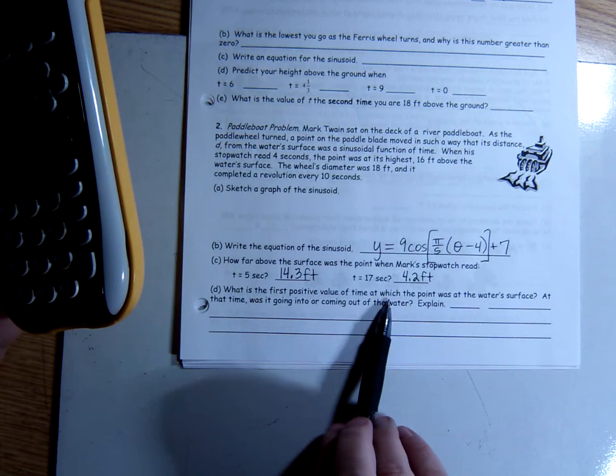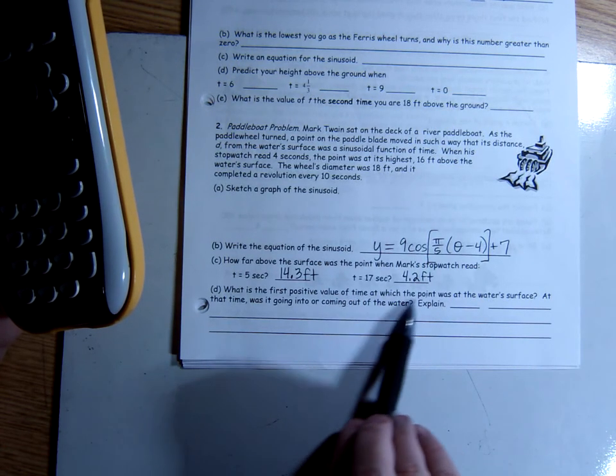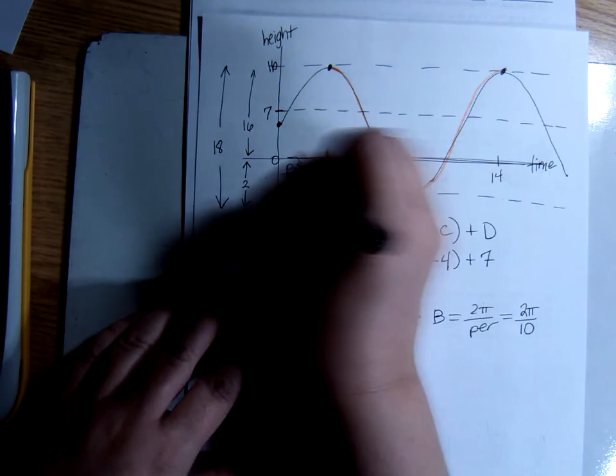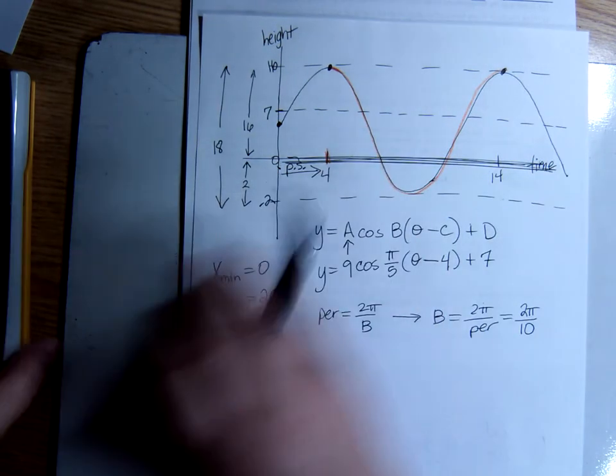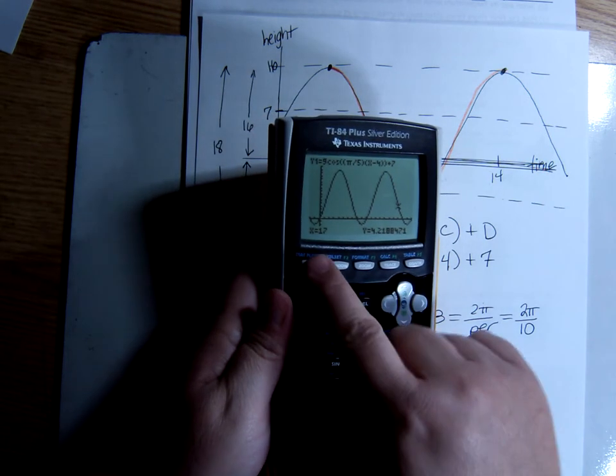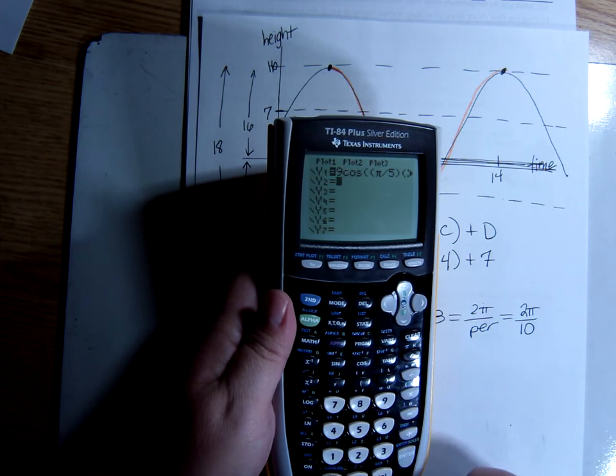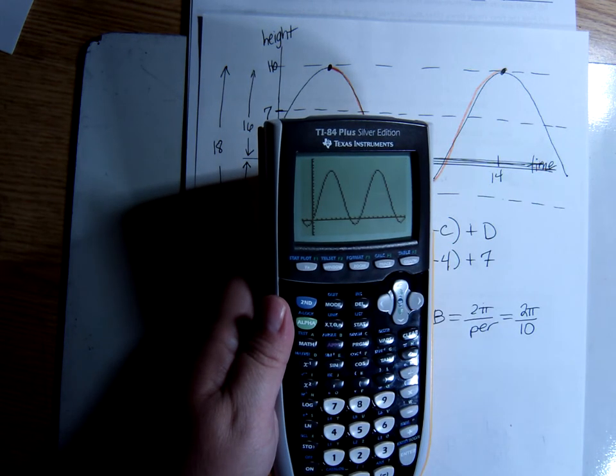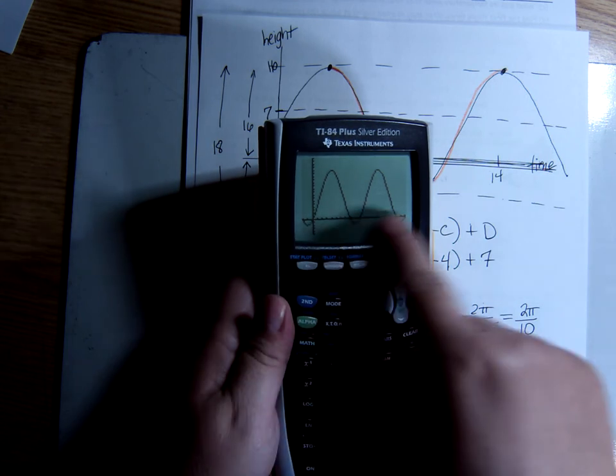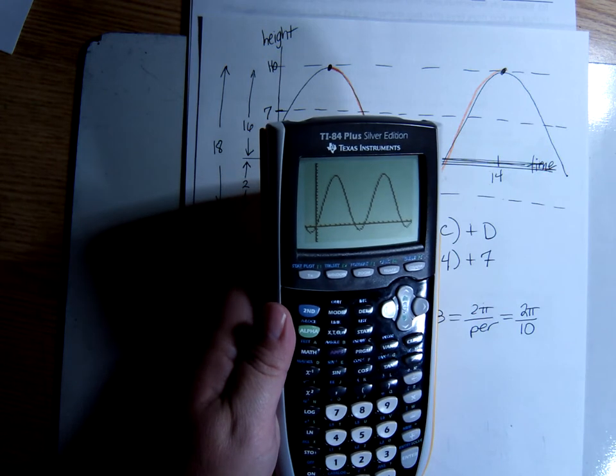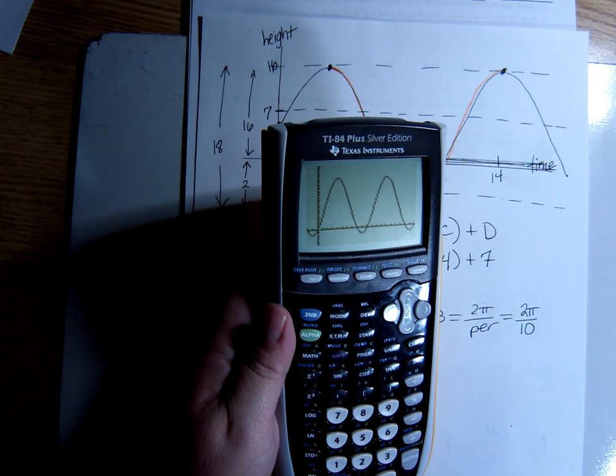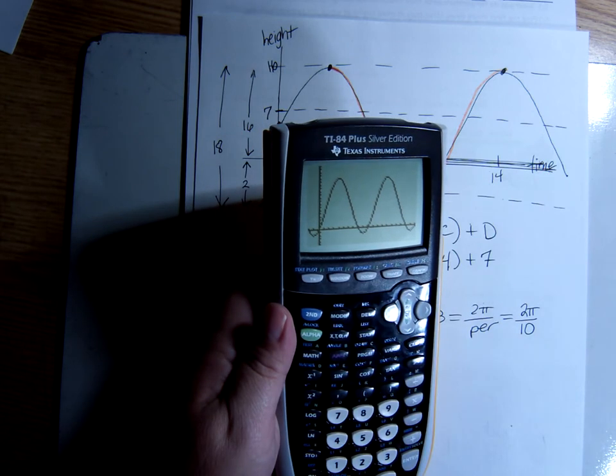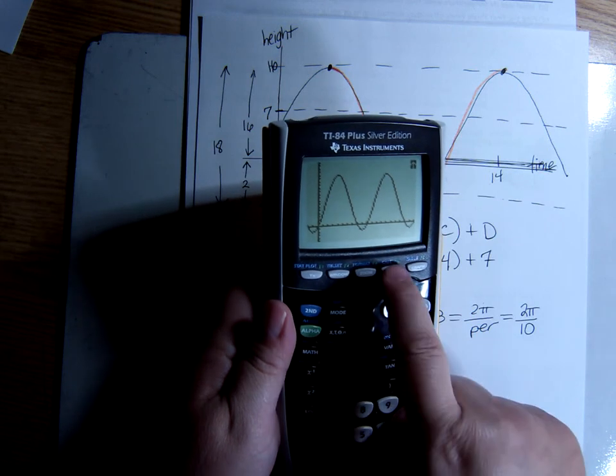What is the first positive value of time? So, that's asking me what is the value of x at which the point was at the water surface. At the water surface, here's the water surface. So, that means when y is 0. So, we're looking for when is y 0 here. So, I'm going to go here, and there's a reason I'm doing it this way. There are other ways to do it for this, but I'm going to graph a second line, y equals 0. And then I'm going to come back here, and I won't be able to see it because it's the x-axis. The line y equals 0 is the x-axis, but let's just assume there's a line drawn there on top of the x-axis. And then what I'm going to do is I'm going to find out where those two graphs intersect. The graph that is the curve, the sinusoidal function, and the graph that is the horizontal line, y equals 0. I'm going to use the intersect function under calc.